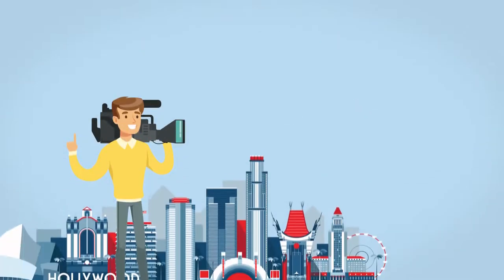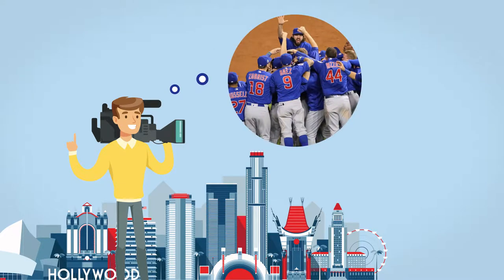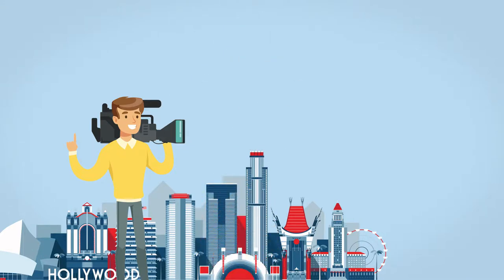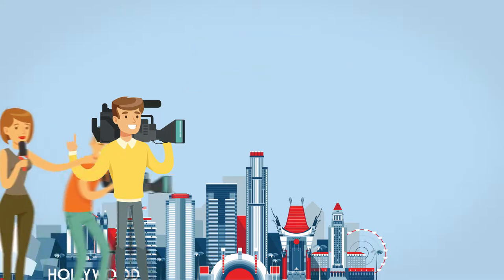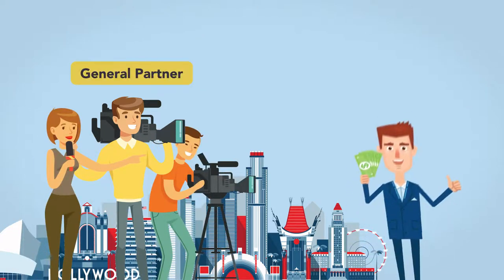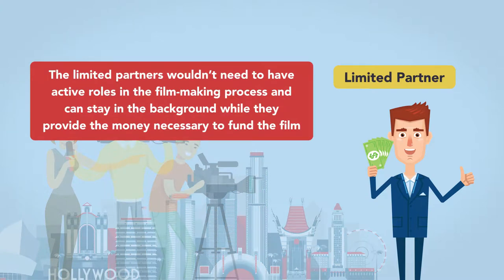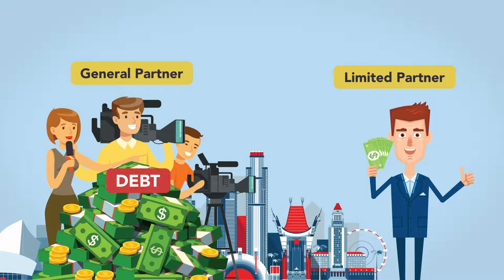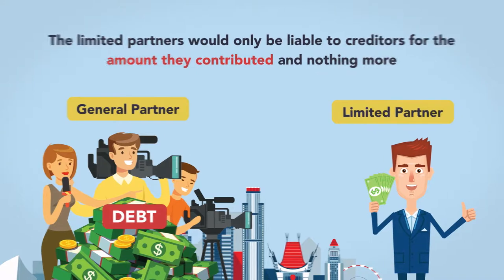For example, Jared is a recent film school graduate looking for his first big break in Hollywood. A native Chicagoan and rabid sports fan, he wants to produce a drama based on the Chicago Cubs' 2016 World Series victory. He doesn't have the capital necessary to get the project off the ground, so he's looking for investors. Jared can look to the limited partnership as the business entity to drive funding. He and his co-producers would be the general partners, while investors who just contribute money would be limited partners. The limited partners can stay in the background while they provide funding. Should the limited partnership incur debt and fail, the limited partners would only be liable for the amount they contributed.